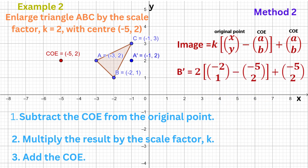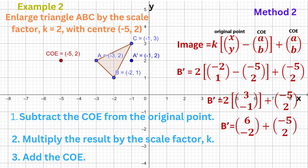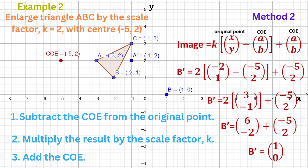Now let's calculate the image of B. The original point B is (-2, 1). Subtract the centre of enlargement (-5, 2): -2 minus -5 is +3, and 1 minus 2 is -1. So the original point minus the centre of enlargement is (3, -1). Multiply (3, -1) by the scale factor 2 to get (6, -2). Add (6, -2) to the centre of enlargement (-5, 2): 6 + (-5) = 1 and -2 + 2 = 0. So the image of B is (1, 0).